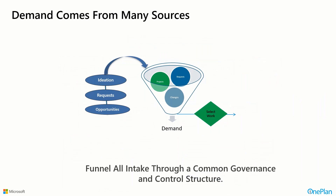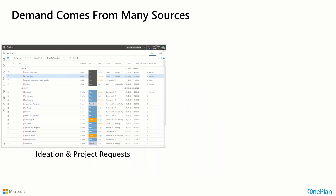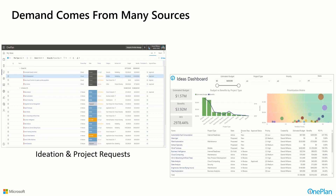When it comes to ideation and innovation, demand comes from many sources. In a product orientation, it's really about ideation. OnePlan provides a place to capture ideas, capture data points around them, and in one place evaluate, prioritize, and decide which to promote into things you'd actually like to work on and fund. There's also analysis and reporting so you can do detailed analysis on the qualitative and quantitative nature of these ideas, ensuring you work on the right things and make intelligent decisions.